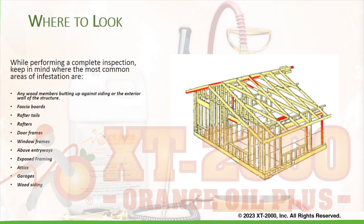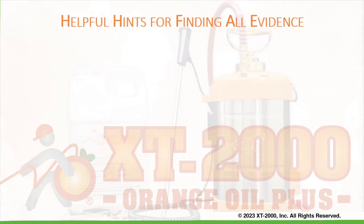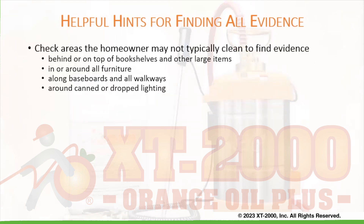Most of these areas have been highlighted in red on the diagram to the right. Helpful hints for finding all evidence: Check areas the homeowner may not typically clean to find evidence, such as behind or on top of bookshelves or other large items, and in or around all furniture.